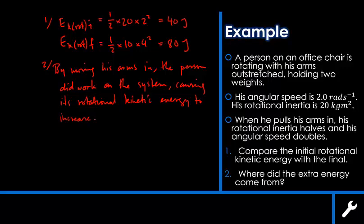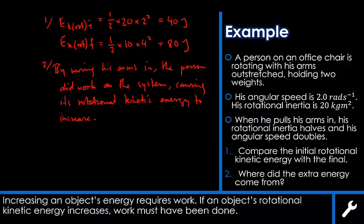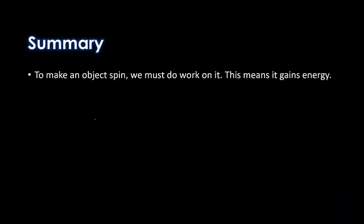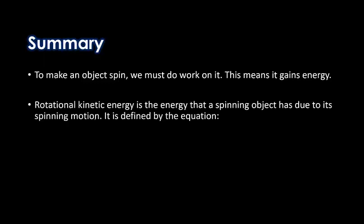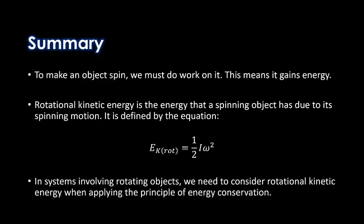To summarize: to make an object spin we have to do work on it, meaning it gains energy. Rotational kinetic energy is the energy a spinning object has due to its spinning motion, defined by E k rotational equals half I omega squared. In systems involving rotating objects, we need to consider rotational kinetic energy when applying the principle of energy conservation.